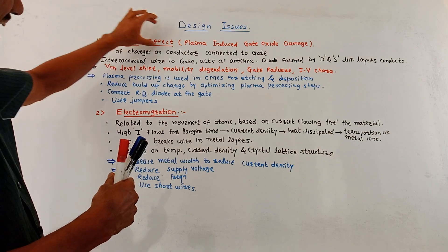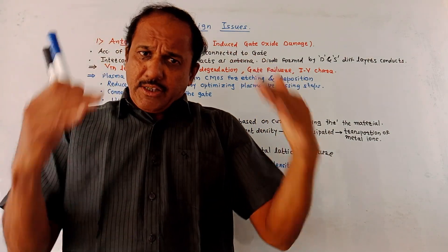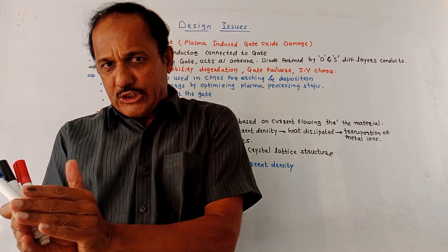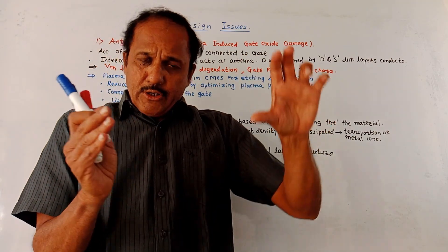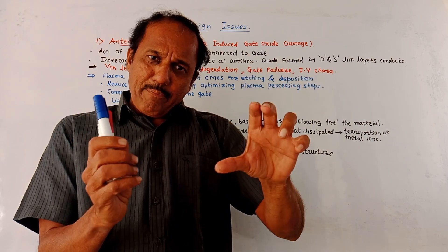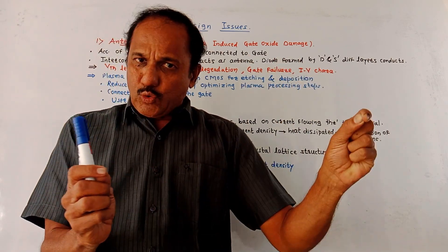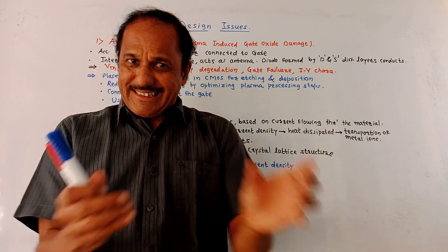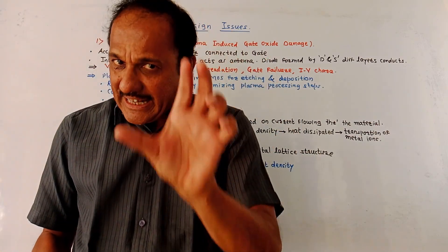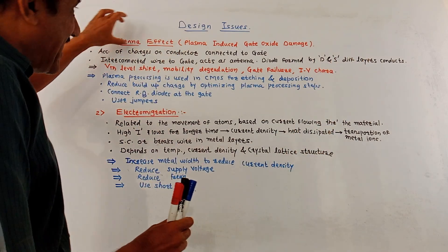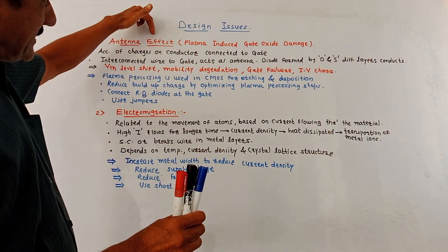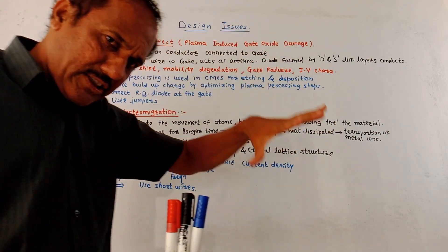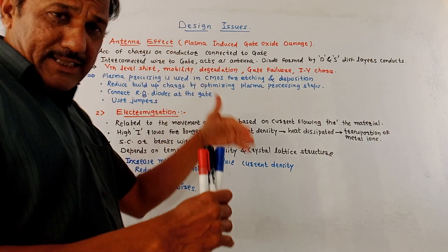First, let us talk about the antenna effect. In case of fabrication of CMOS devices, plasma processing is used. During the plasma processing, it may happen that the wires connected to the gate terminal of the MOSFET will have accumulation of charges, and such wires act as an antenna — this is called the antenna effect.